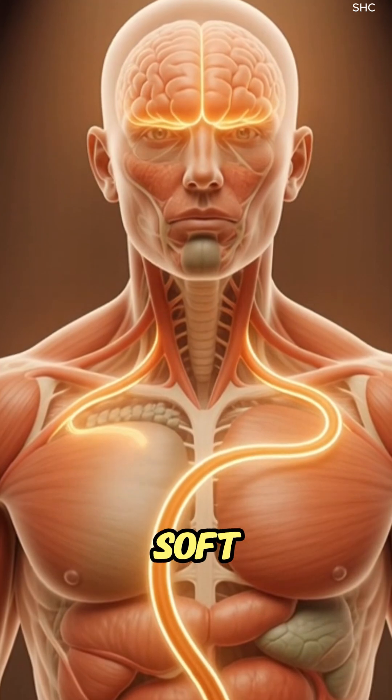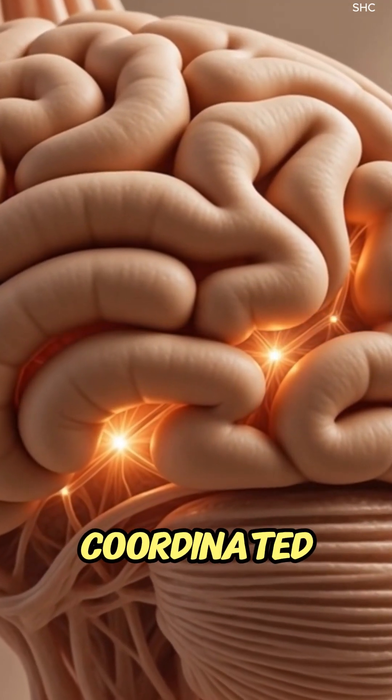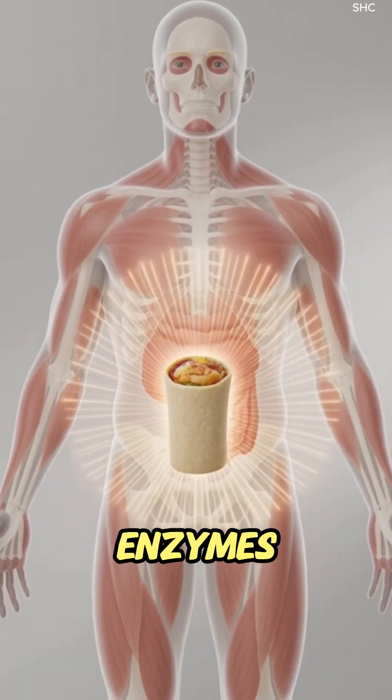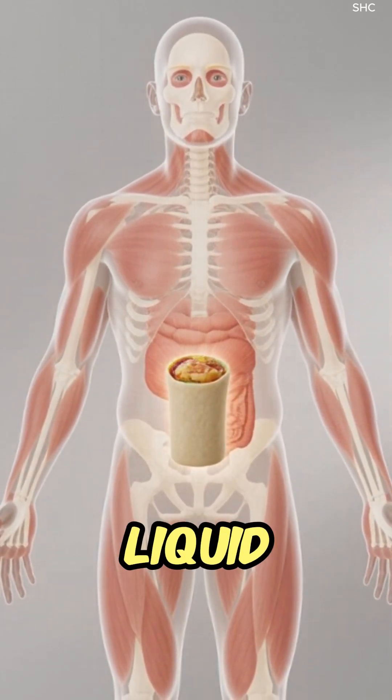The blended bite forms a soft bolus and slides down the esophagus through coordinated waves until it reaches the stomach, where gastric acid and enzymes dismantle the burrito's diverse ingredients into a semi-liquid chyme.